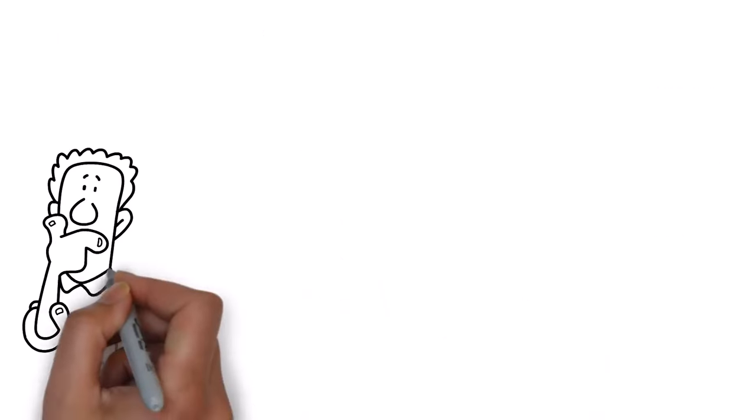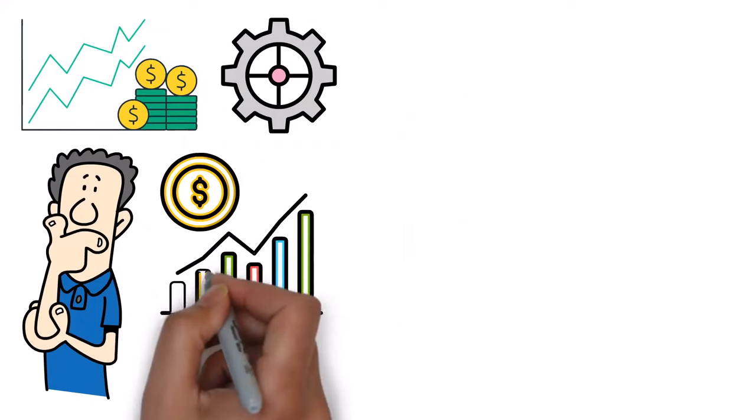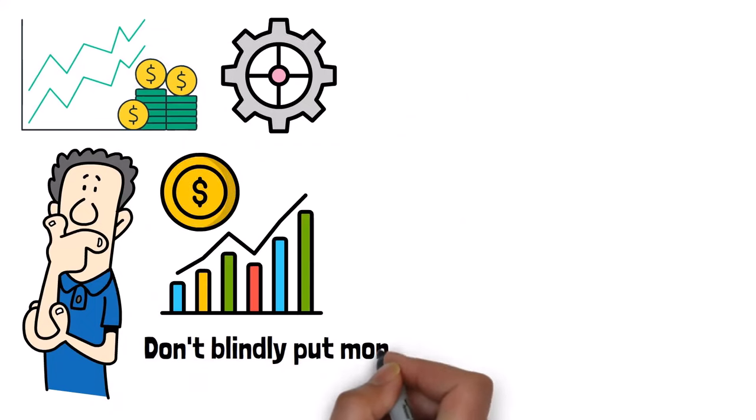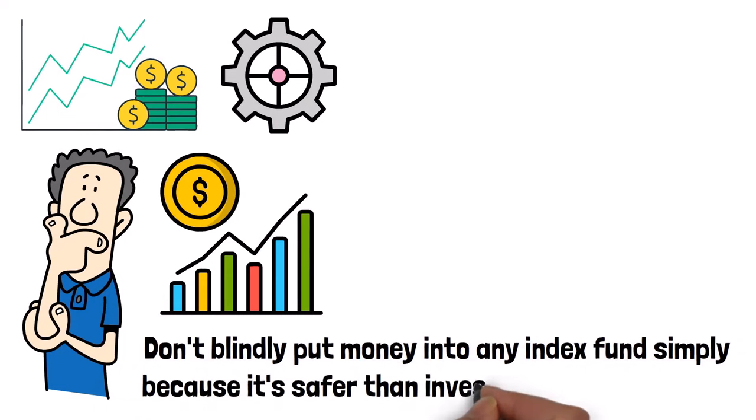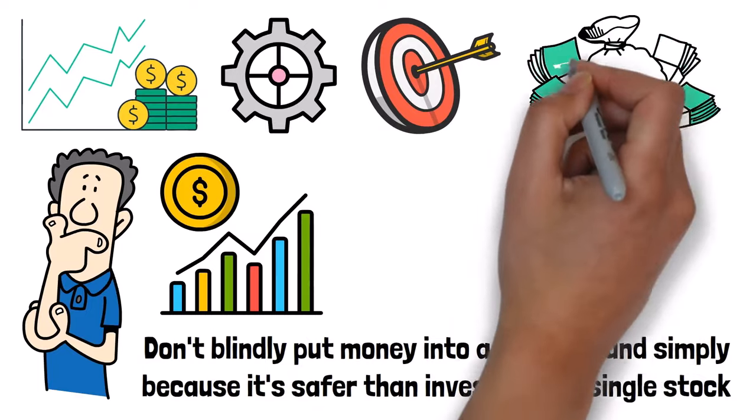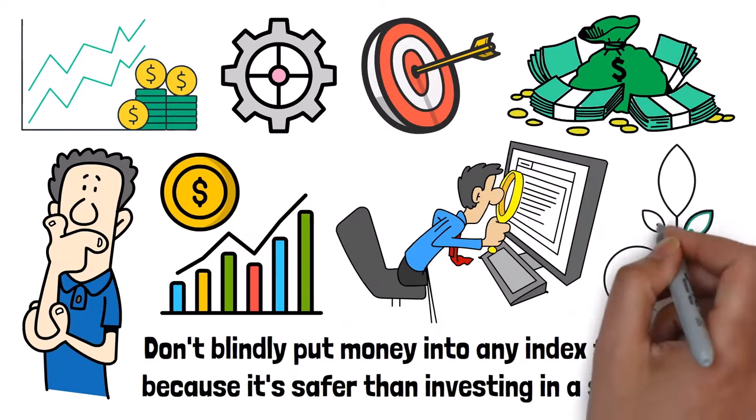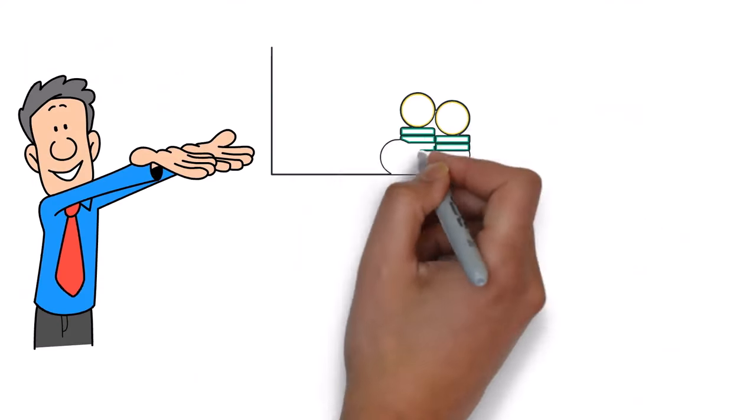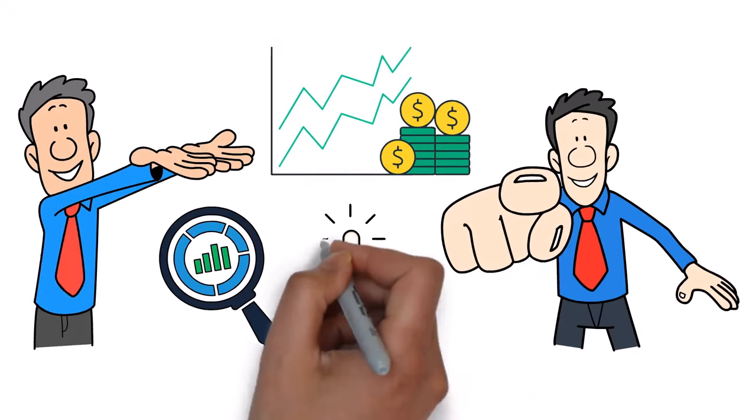So how do you invest in index funds? Well, it is pretty much the same process as investing in regular stocks. But here's the thing. Don't blindly put money into any index fund simply because it's safer than investing in a single stock. If your goal is to make a lot of money from the stock market, then always look for the best performing index funds and invest in them. I'll share a few examples of index funds with you. But remember, it's up to you to research and select your best option fund.